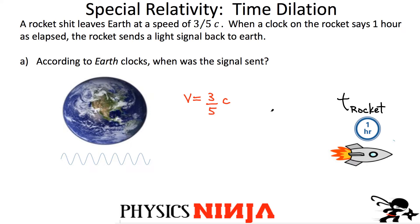Remember, there is only one proper time, and there are as many dilated times as you could possibly think of. To determine which one measures the proper time, imagine a reference frame attached to the Earth, and here's a reference frame attached to the rocket. With respect to the rocket, there are two events: when the rocket is on the left-hand side, and when the rocket is on the right-hand side, a certain distance away. Both of these events happen at the same position in the rocket's reference frame.